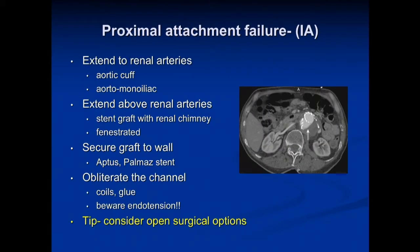For proximal attachment failure, type 1 — what are the options? You can extend to the renal arteries if there's room with an aortic cuff. If that is not feasible given the geometry, you can extend up with an aorto-monoiliac system and do a fem-fem bypass. Another option is to extend above the level of the renal arteries and place a stent graft within the renal, causing a chimney, or use some type of fenestrated approach. You can try to secure the graft to the aortic wall using the Aptus stapler or a Palma stent. Or you can try to obliterate the channel with coils or glue — but beware, if you're going to obliterate the channel, that there will not be endotension; you may have a satisfactory angiographic result without decreasing the pressure in the sac.